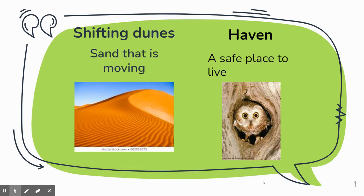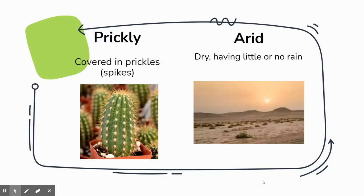A haven is a safe place to live. Here's an owl in his owl hole—that's his safe home, his haven. Prickly means covered in prickles or spikes. When they're talking about cactuses, of course they have spikes and they're prickly.